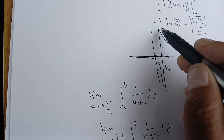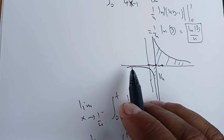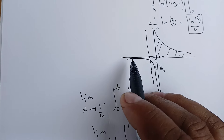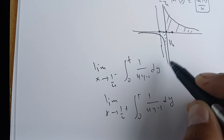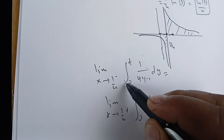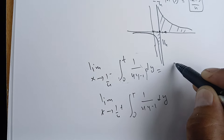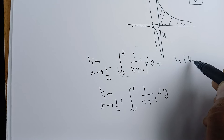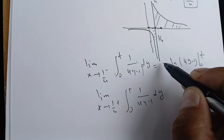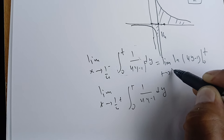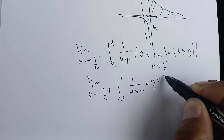We are trying to find this area and we don't know if it's finite or infinite — we have to find out. We can find a primitive of this function as the natural log of |4y - 1|, evaluated between 0 and t, and then take the limit as t goes to 1/4 from the left.